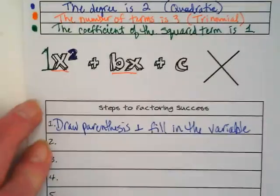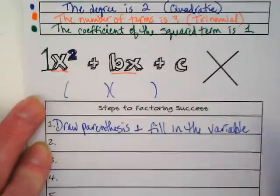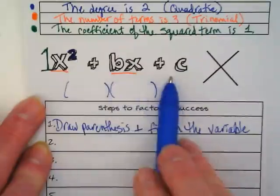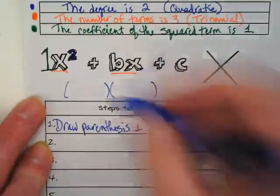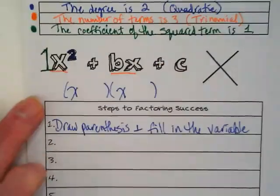The factors we're going to get from this is going to be a pair of parentheses. And in this case, because the terms are x, the b and the c would be numbers. We're going to have x here and x here. That would be how you would do step one.